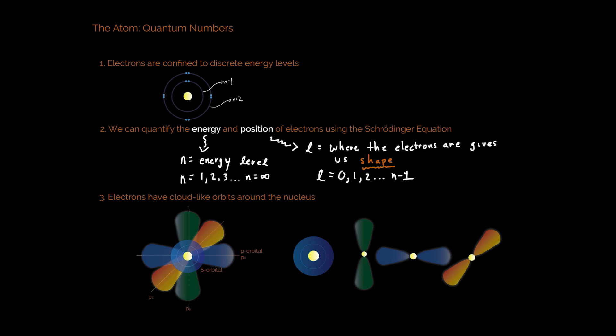Number one is that electrons are confined to discrete energy levels. Now this is actually a topic that classical theory and quantum theory agree on. Below this I have a diagram that is definitely a classical model. This is the solar system model of an atom. And what it shows is that the electrons clearly exist in different energy levels. You see that n equals one, n equals two, and that can actually keep going all the way until or as n approaches infinity.